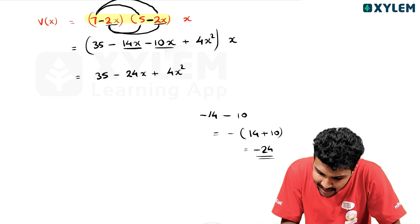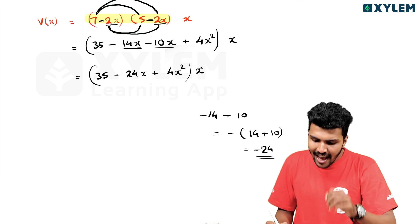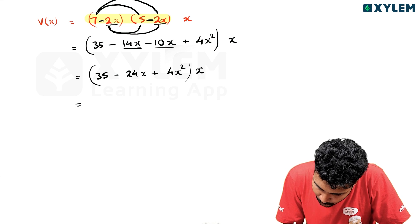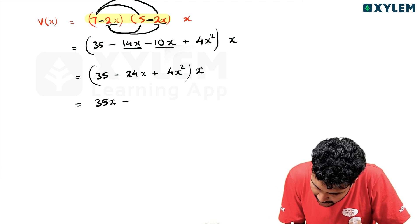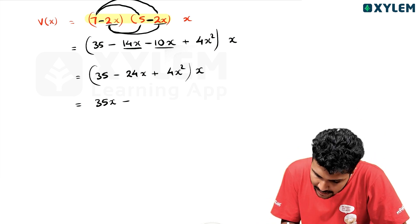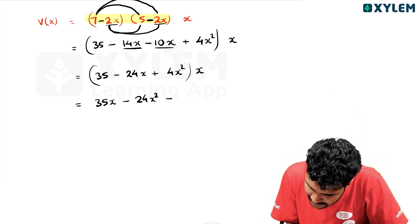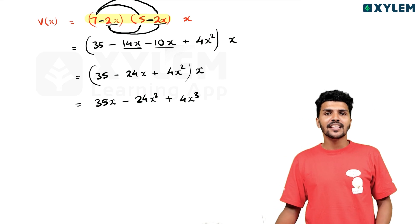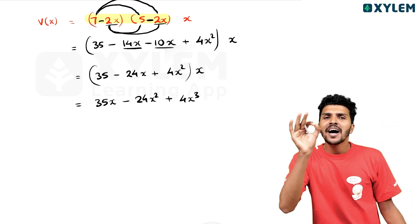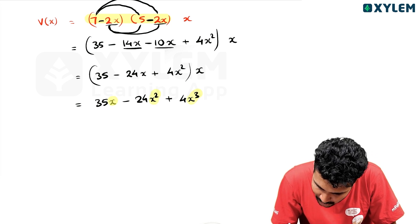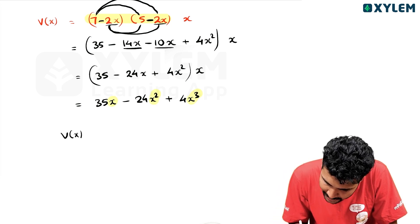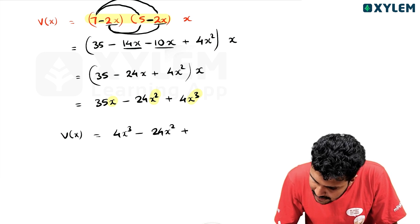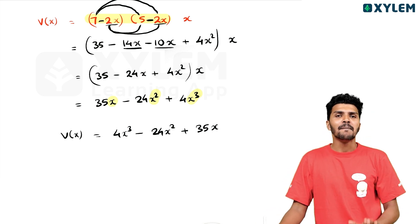Minus 24x plus 4x squared. So, 35 minus 24x plus 4x squared. Combining terms: 4x cubed minus 24x squared plus 35x. V of x is equal to 4x cubed minus 24x squared plus 35x.